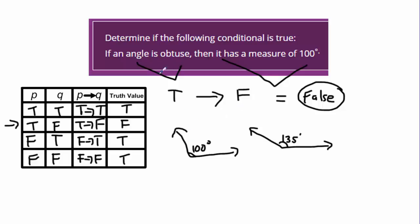If this is true, if I have an obtuse angle, is it possible to draw something other than what they're saying the conclusion is? Well, I did find an angle that was not 100 degrees. Therefore, I was able to prove this conditional to be false.